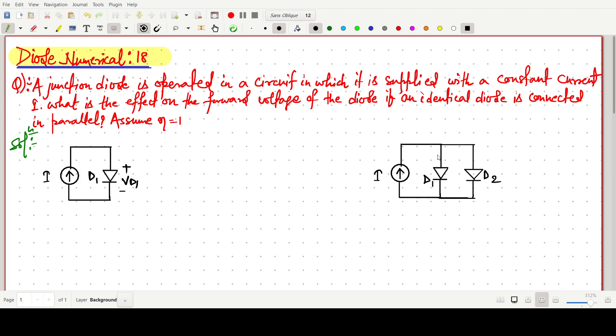What is the effect on the forward voltage of the diode if an identical diode is connected in parallel? Now, instead of single diode, two diodes are there. Identical diode. So we can say the current in this diode D1 will flow like I by 2.